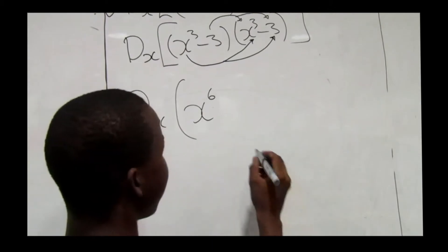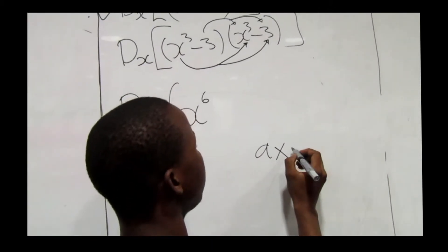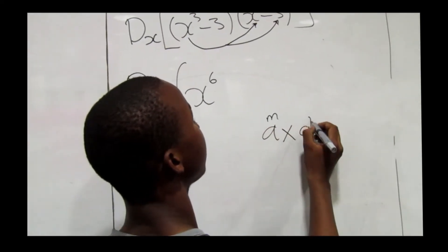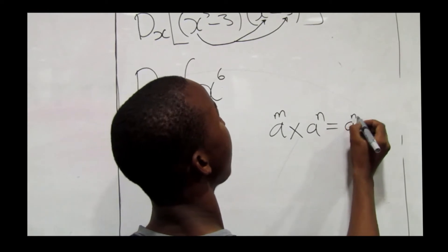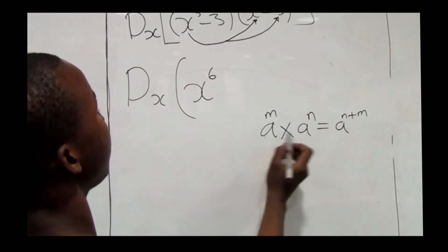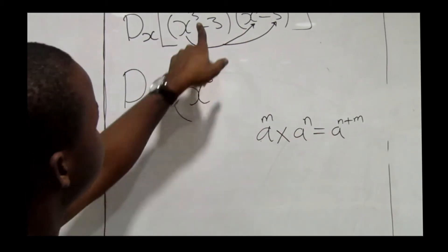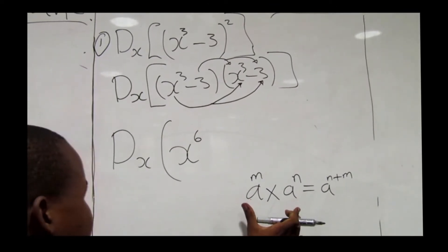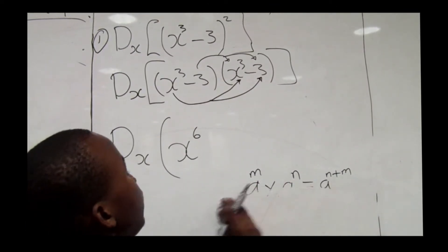How do we get x to the power 6? Remember the rule of exponents: a^m × a^n equals a to the power n plus m. Our base is x, and our exponents are 3 and 3. Since the bases are the same, we add the exponents to get 6.